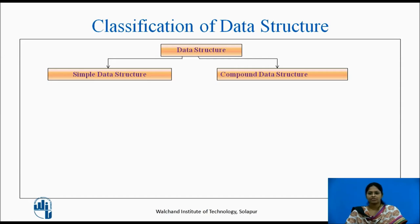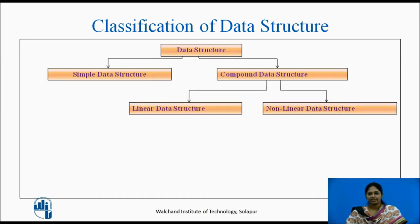Variables, pointers, structures and unions are the examples of primitive data structures. Whereas, compound data structures can be constructed with the help of any one of the primitive data structures and it has a specific functionality. It can be designed by the user. It can be classified as linear data structure and non-linear data structure.